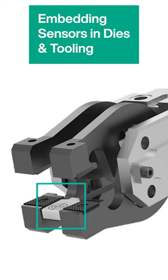Embedding and recessing part-presence sensors in dies and tooling protects them from damage, but not every sensor can be nested in steel. This short video guides you in selecting the best model for the task.